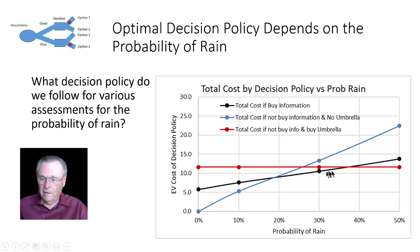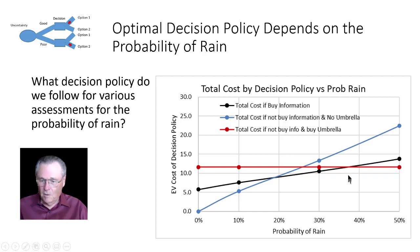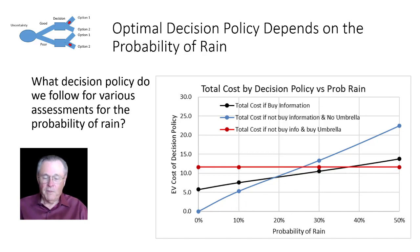Then from that 18% to around 37%, we would buy information. But if it was over 37%, then we would just buy an umbrella and be safe all the time. So you can see there are three decision policies. With that, let's go over to the model.